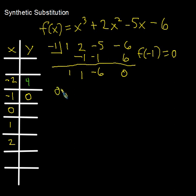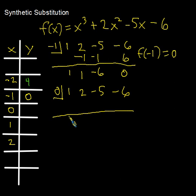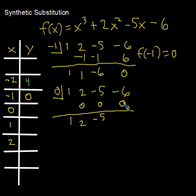Let's try x equals 0, with coefficients 1, 2, negative 5, negative 6. Since we're multiplying by 0 each time, all the added terms are 0: 2 plus 0 is 2; 0 times 2 is 0; negative 5 plus 0 is negative 5; 0 times negative 5 is 0; negative 6 plus 0 is negative 6. So f of 0 equals negative 6.